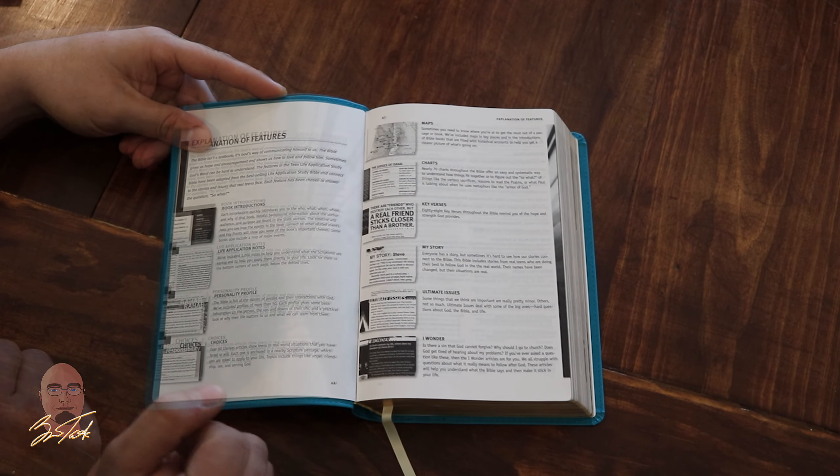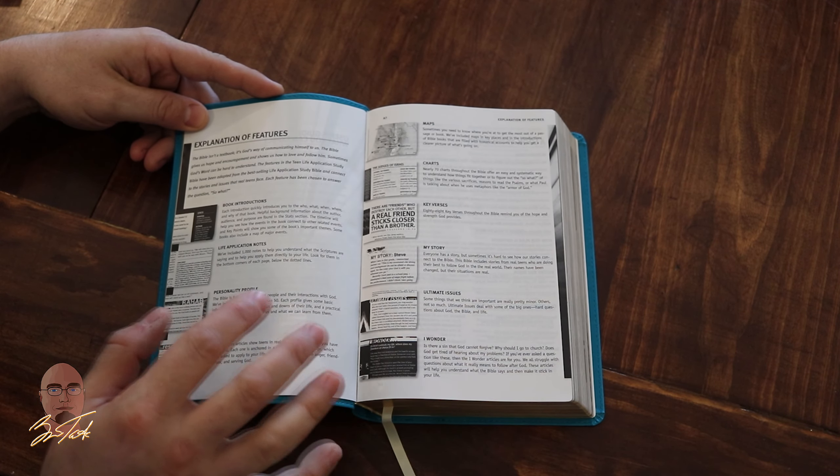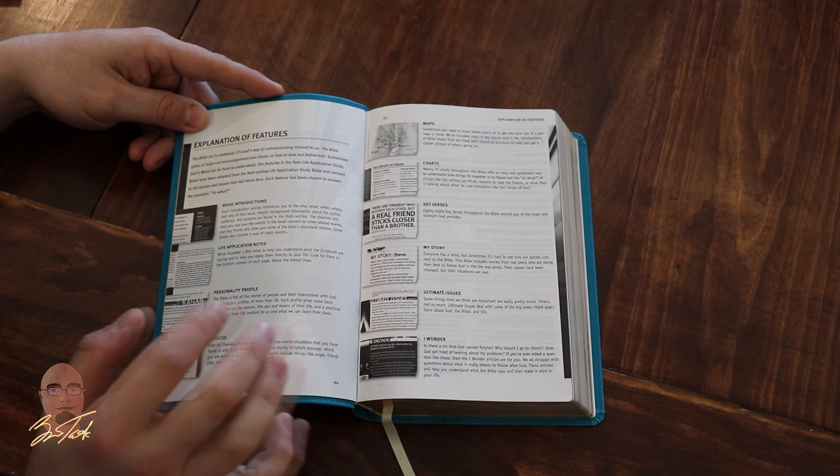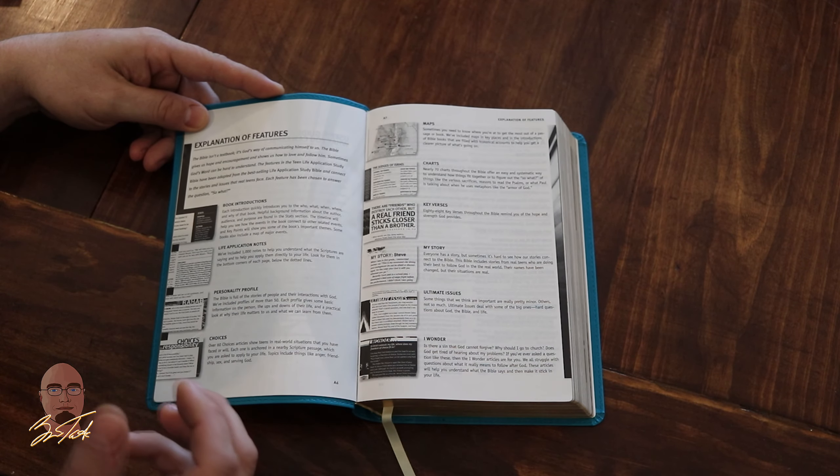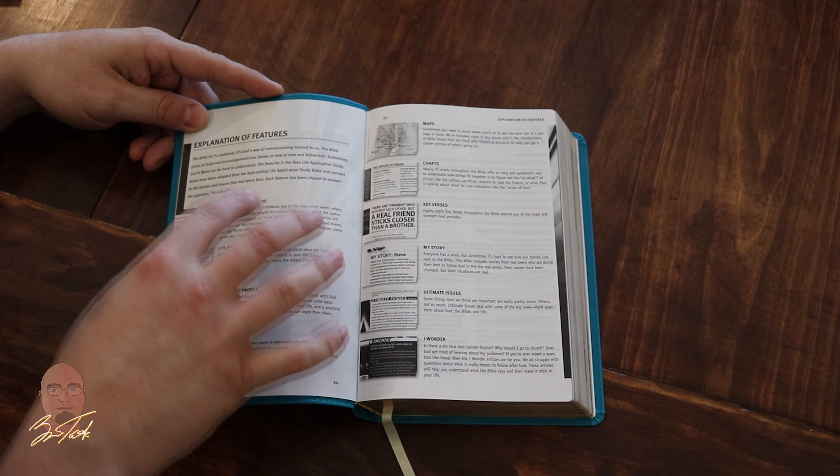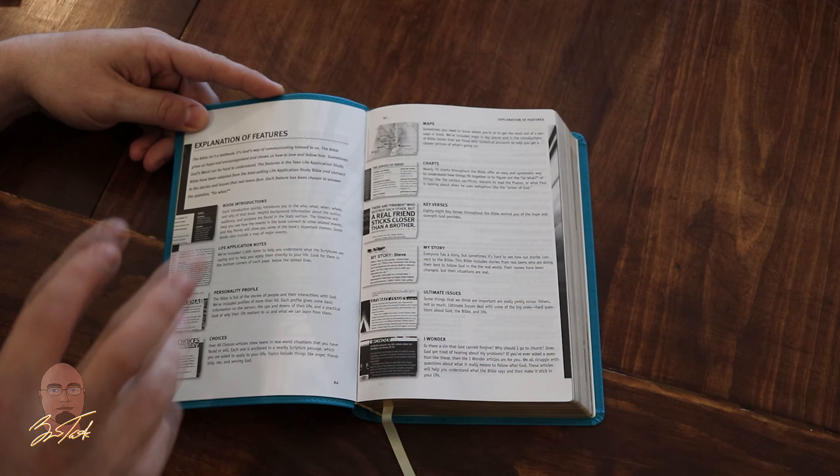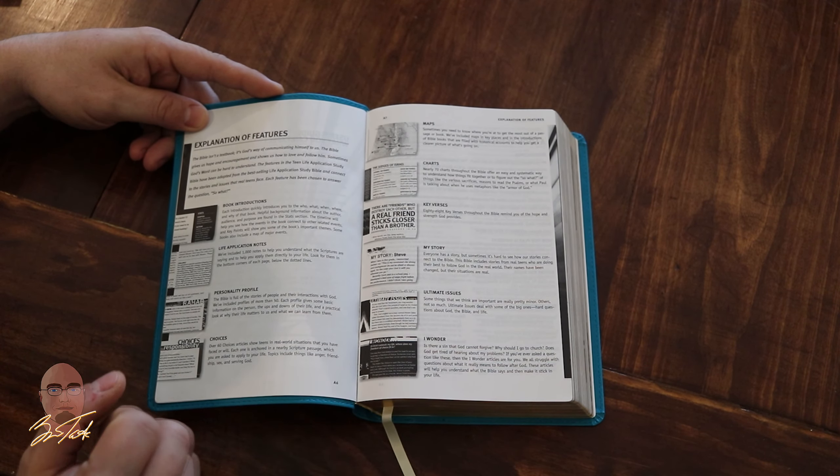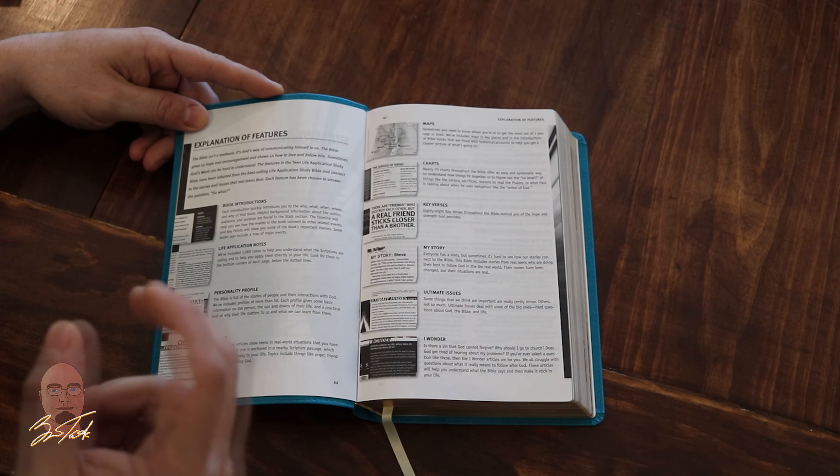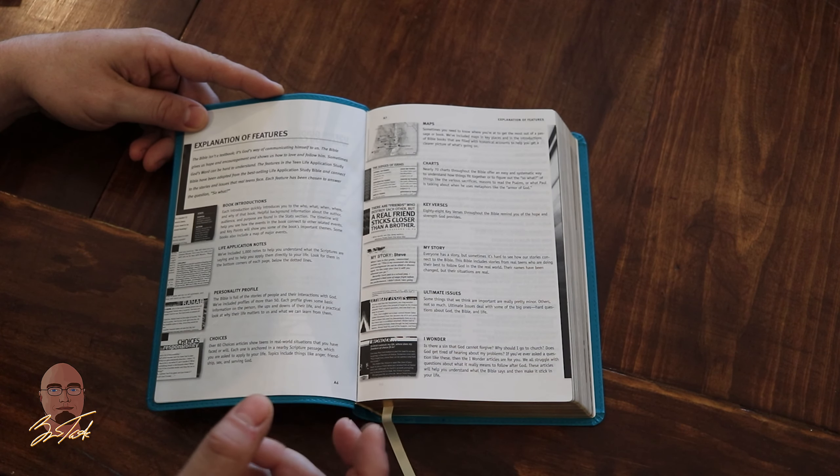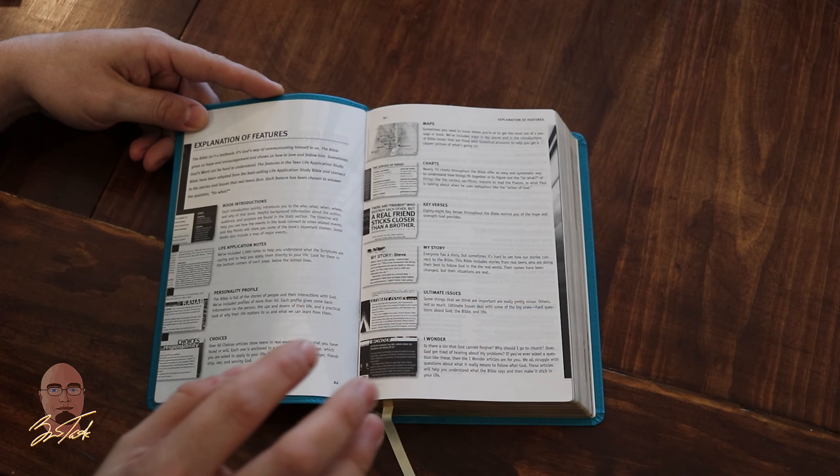When trying to decide if this Bible is right for your teenager, do they like digging in with notes or do they like examples, or do they need graphs and little breaks in study? That's what these different features do. They give them something different, a different kind of graphic to gravitate toward, so they're not overcome by an astounding amount of notes.